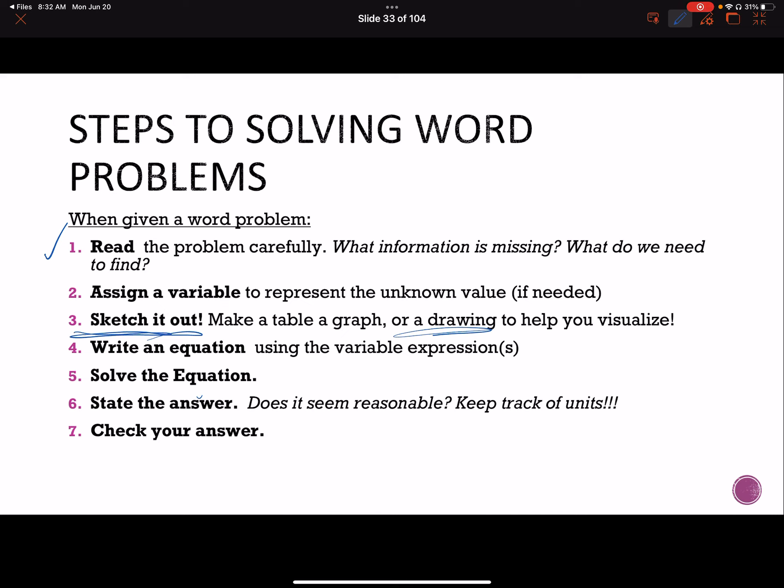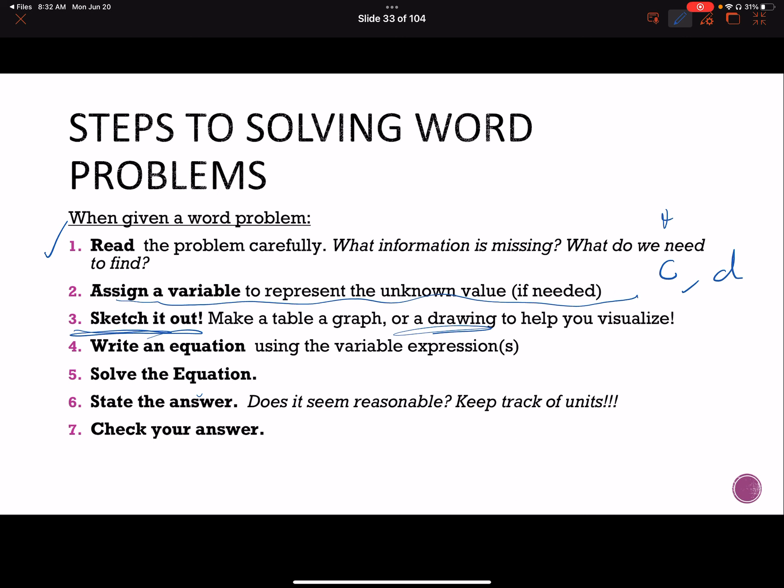Finally, you're going to need to write an equation using the variables that you came up with. If you do need to assign a variable, quick tangent, make sure there's something that makes sense. Like if you're trying to figure out numbers of cats and dogs, use like C and D. So C is cats and D is dogs. I know typically in math we use X or Y, but assign a variable that makes sense.